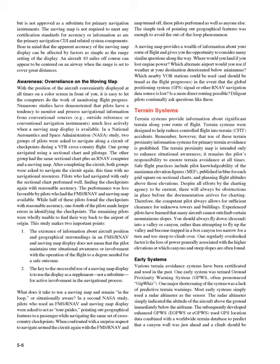Despite all efforts by the charting agency to be current, there will always be obstructions in place before the documentation arrives for charting. Therefore, the competent pilot always allows for sufficient clearance for unknown towers and buildings. Experienced pilots have learned that many aircraft cannot outclimb certain mountainous slopes. You should always fly down — descend — into a valley or canyon, rather than attempting to fly up the valley and become trapped in a box canyon too narrow for a turn and too steep to climb over. One regularly overlooked factor is the loss of power generally associated with the higher elevations at which canyons and steep slopes are often found.